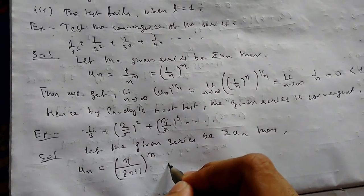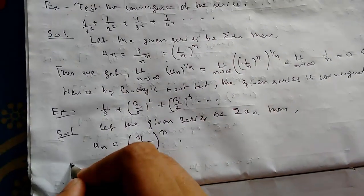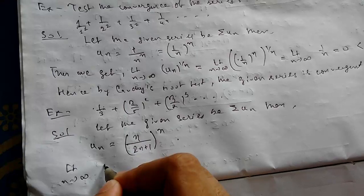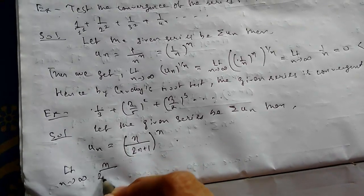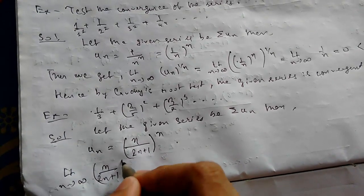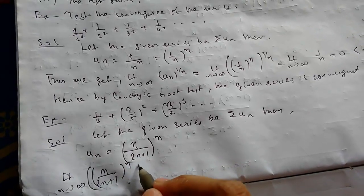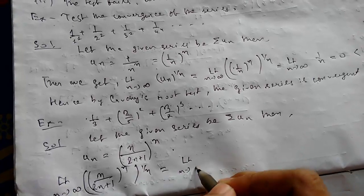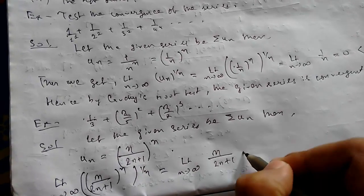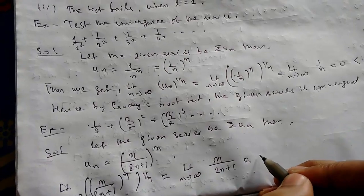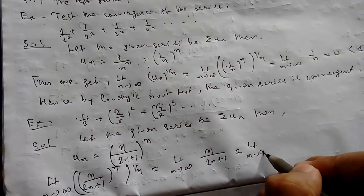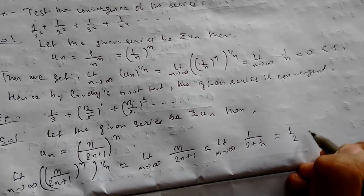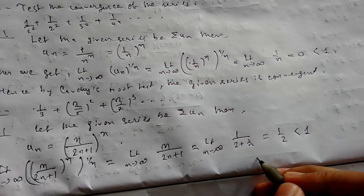Now, limit n tending to infinity of (u_n)^(1/n). This will be [n/(2n+1)]^n, whole to the power 1/n. So this becomes limit n tending to infinity of n/(2n+1). Dividing numerator and denominator by n, this will be 1/2, which is less than 1.